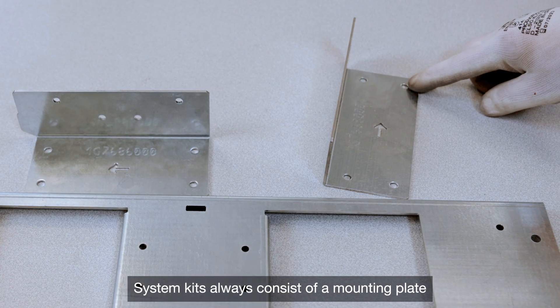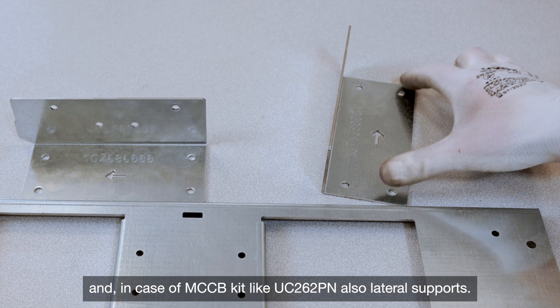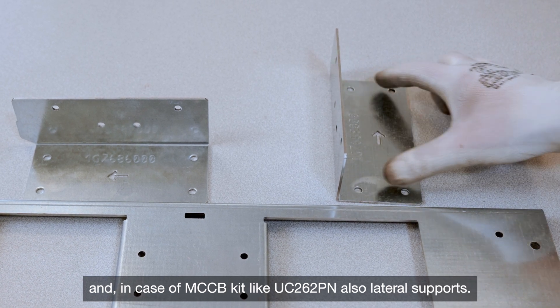System kits always consist of a mounting plate and, in case of MCCB kit like UC262PN, also lateral supports.